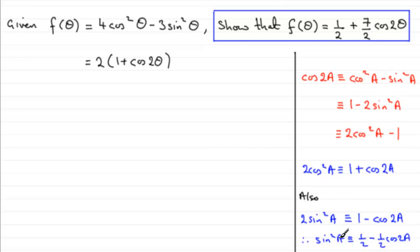So if a is theta, we've got sine squared theta is identical to 1 half minus 1 half cos 2 theta. And we can substitute that into here. So we've got minus 3 multiplied by, essentially sine squared theta, which is going to be 1 half minus 1 half cos 2 theta.